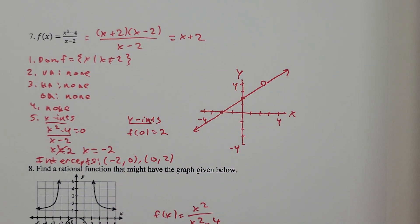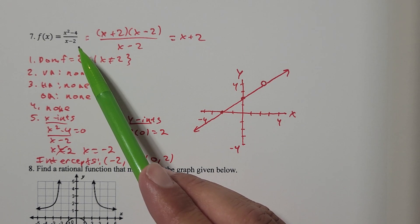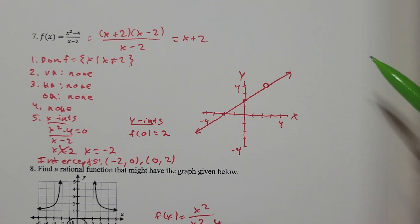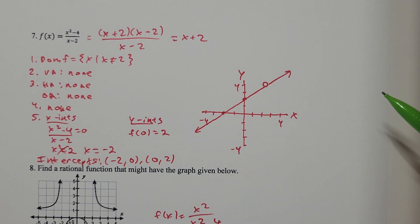This function will have no vertical asymptotes — no asymptotes at all. Why is that? Because the function is not in simplified form. All the other functions on this worksheet were simplified as far as possible, so we could just keep going with our steps. The key words here are 'in the lowest terms.'